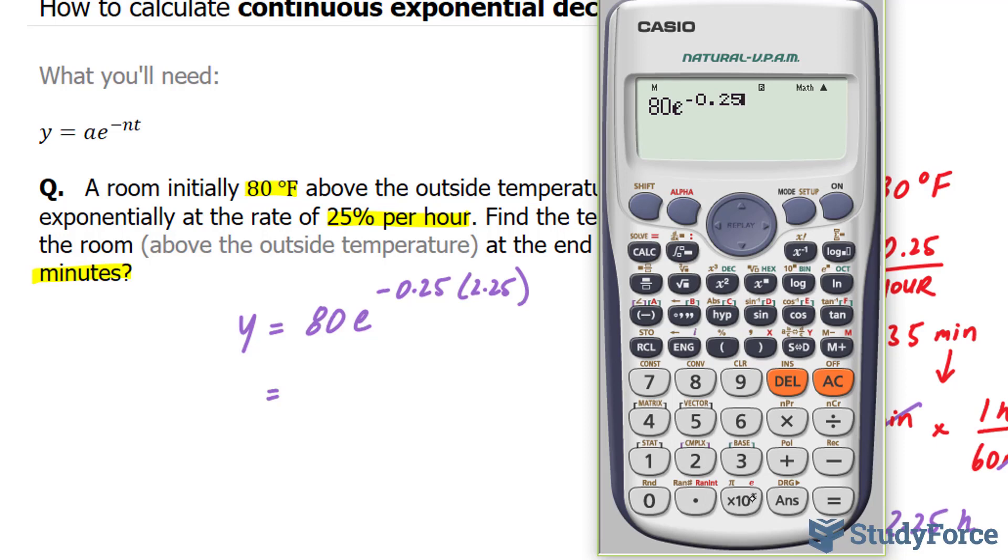And just be aware that in every calculator, it's different. So for me, it was alpha in this button. For you, it might be something else. 2.25 gives us 45.58.